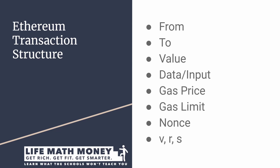The next field is 'to,' which accepts an account address. If you're sending Ether to someone else, this is the account where the Ether will go. If you call a contract, you put the contract's address here. If you put zeros in this field, the Ethereum nodes will understand that you are trying to create a new contract — when the 'to' address is all zeros, that means this is a transaction to deploy a new smart contract.